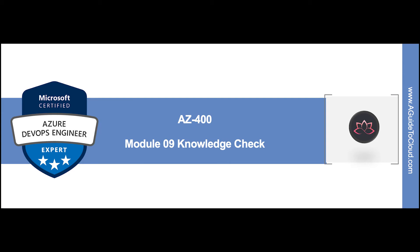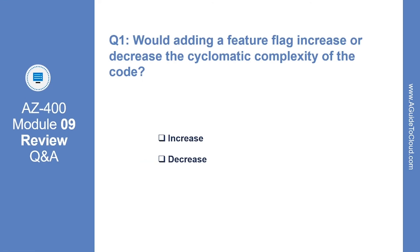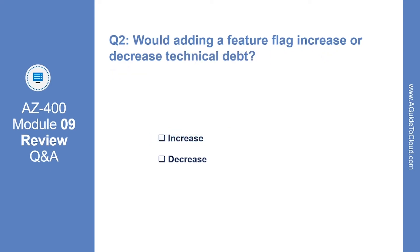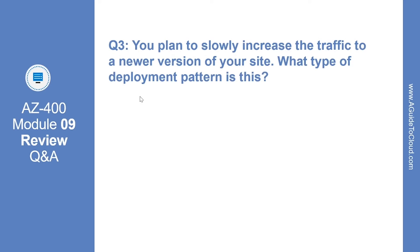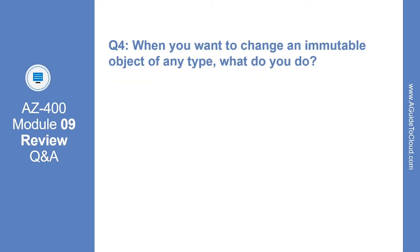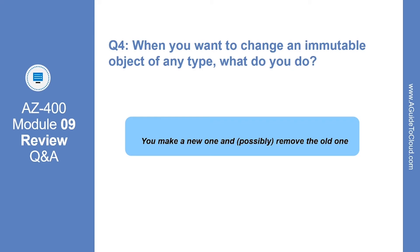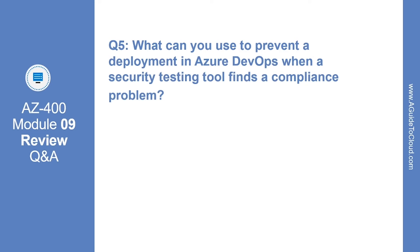In this section we are going to go through AZ-400 Module 9 review questions. Would adding a feature flag increase or decrease the cyclomatic complexity of the code? Increase. Would adding a feature flag increase or decrease technical debt? Increase. Question 3: you plan to slowly increase the traffic to a newer version of your site — what type of deployment pattern is this? The correct answer is blue-green. Question 4: when you want to change an immutable object of any type, what do you do? You make a new one and possibly remove the old one. Question 5: what can you use to prevent a deployment in Azure DevOps when a security testing tool finds a compliance problem? The answer is release gate.